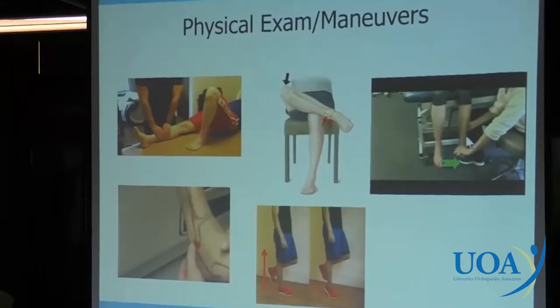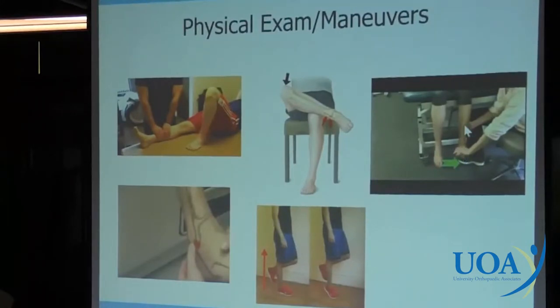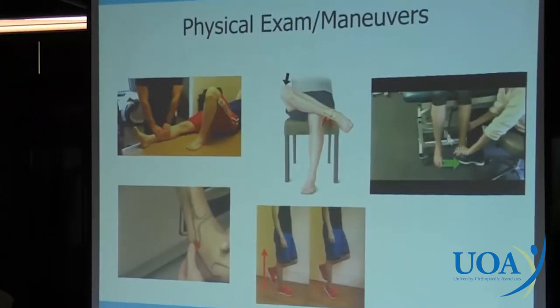One of the most commonly used tests is the Klieger test, or dorsiflexion external rotation maneuver. You stabilize the tibia and dorsiflex and externally rotate the ankle. Pain there indicates a high ankle sprain.